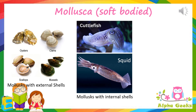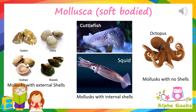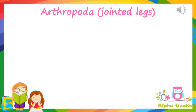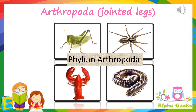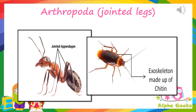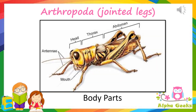Some molluscs with external shells include oysters, clams, scallops, and mussels. Molluscs with internal shells include cuttlefish and squid. Octopus is the only mollusc without a shell.